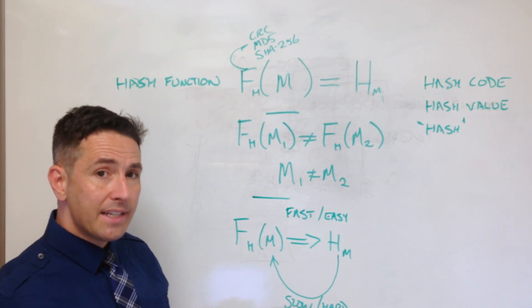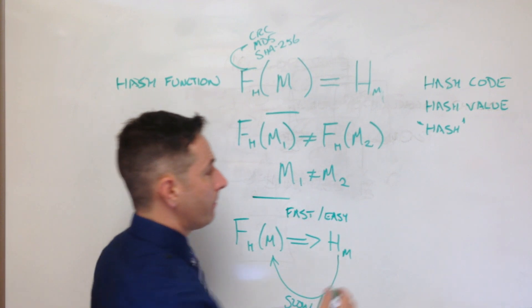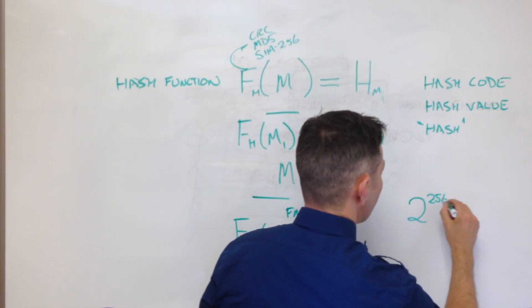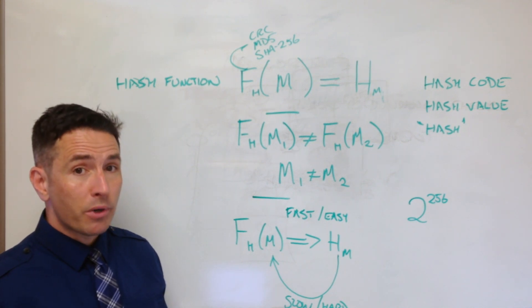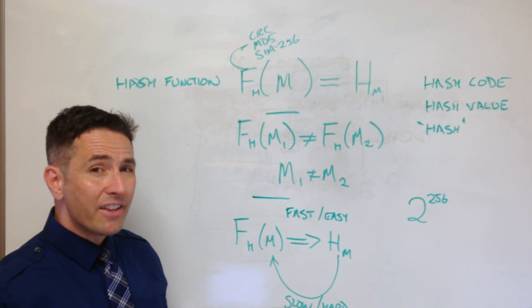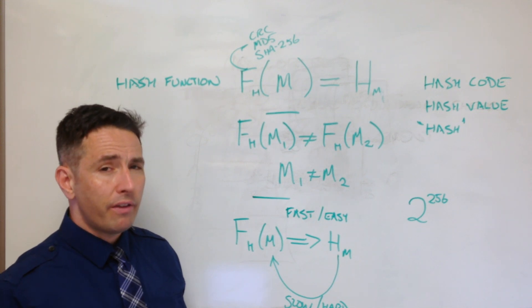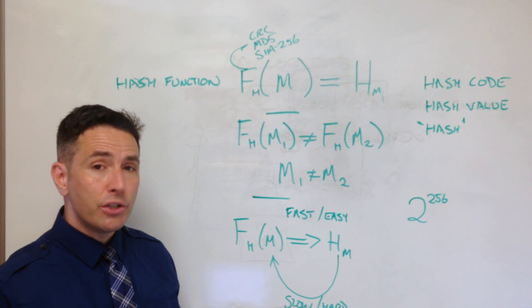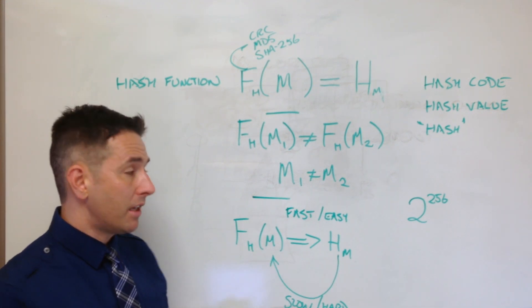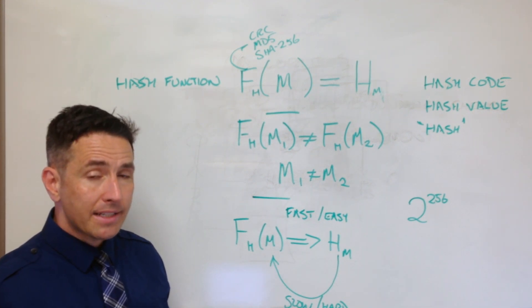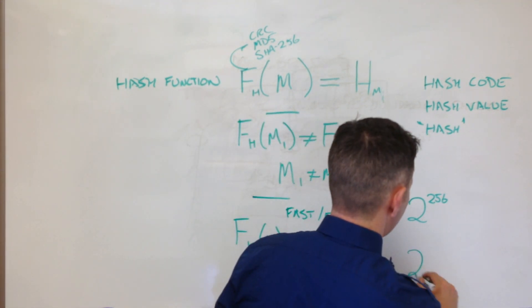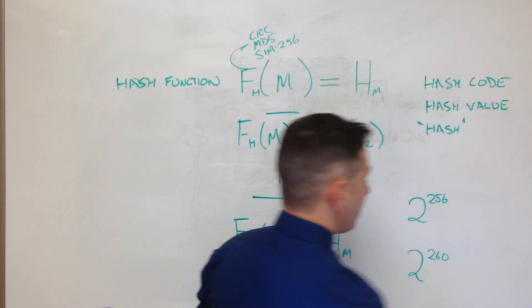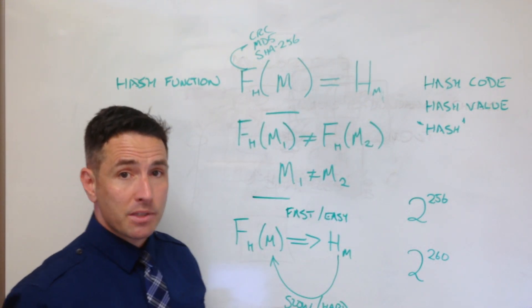Well, in the SHA-256 algorithm, there are 2 to the 256 different fingerprints that you could possibly have. And so it's very, very, very unlikely - in fact, basically it's impossible for two objects that are different to give you the same fingerprint on accident. I mean, just for reference, there's something like 2 to the 260 atoms in the universe.